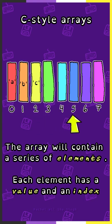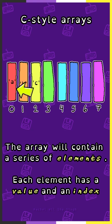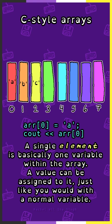The array will contain a series of elements. Each element has a value and an index. A single element is basically one variable within the array. A value can be assigned to it, just like you would with a normal variable.